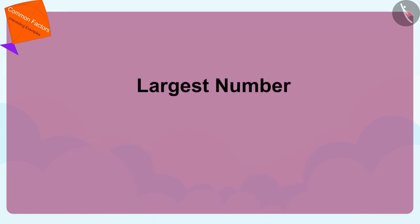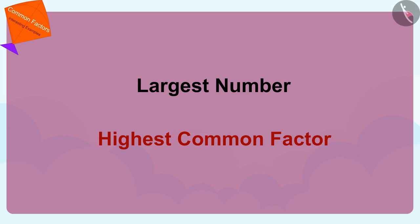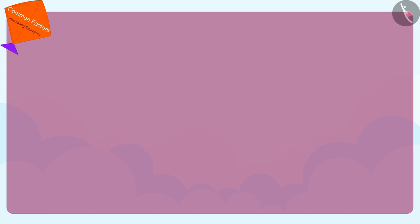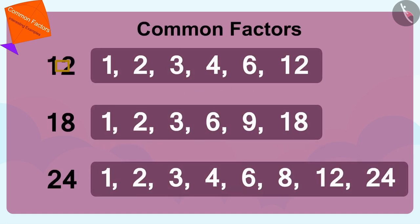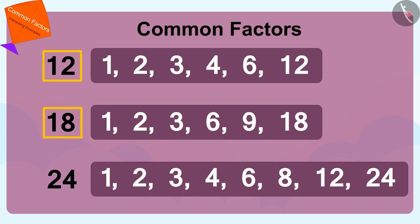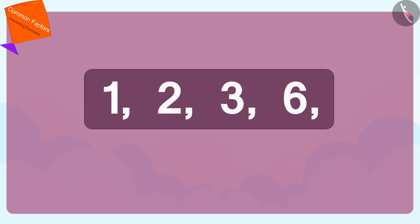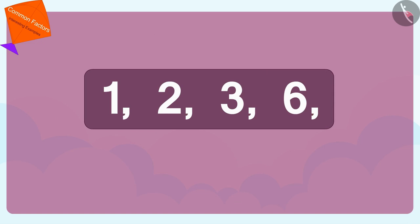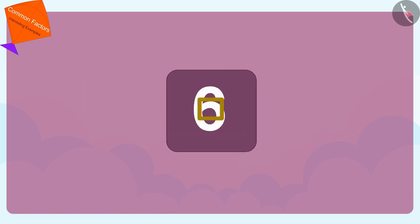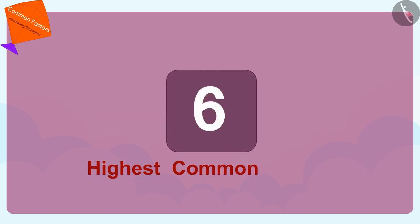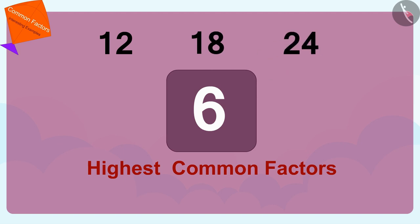So Golu thought he can definitely measure the milk filled in these utensils with a 6-liter vessel. Children, out of the common factors of numbers, the largest number is called the Highest Common Factor. Out of 12, 18, and 24, six is the largest. Therefore, we can say that 6 is the Highest Common Factor of 12, 18, and 24.